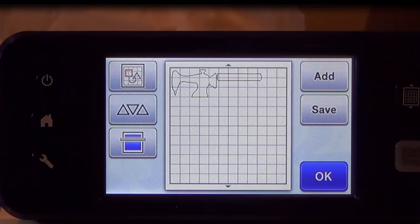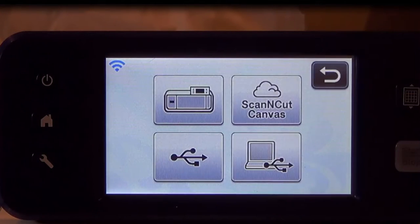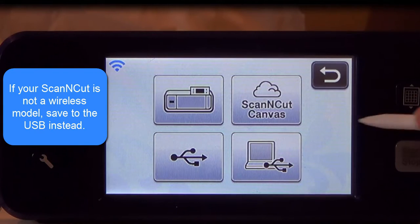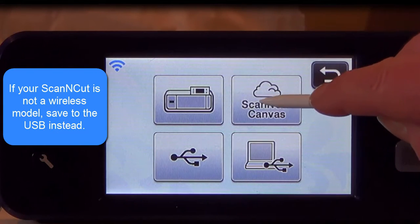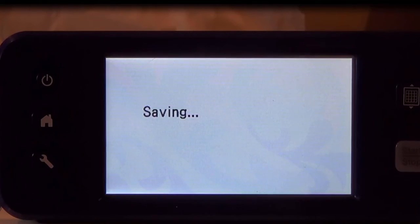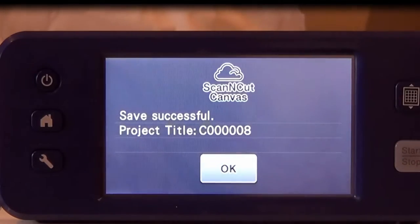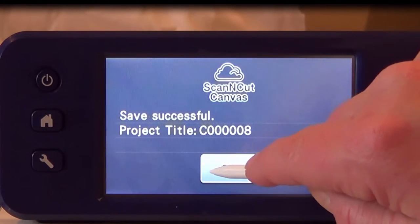Now we're going to save this to our Scan and Cut canvas since this is a wireless model. If you don't have a wireless model, press the USB. Once you press Scan and Cut canvas, it will automatically save to your canvas and you can press OK.